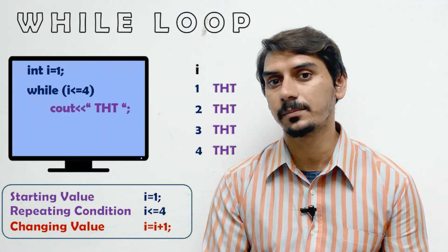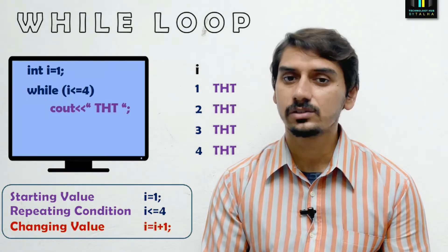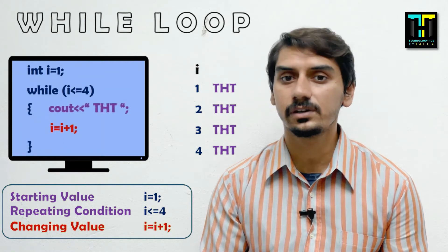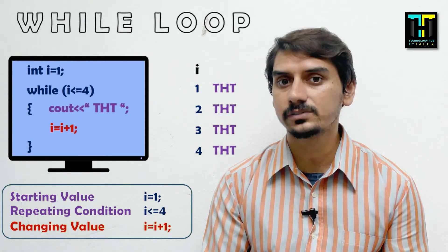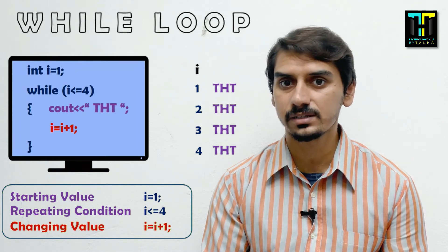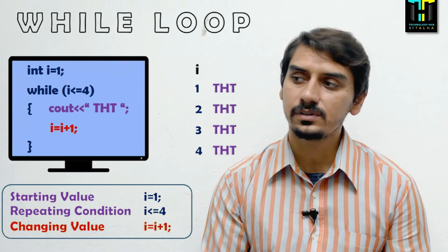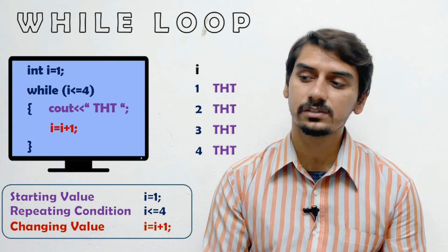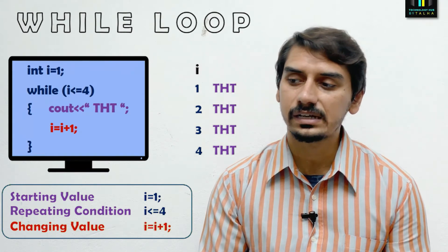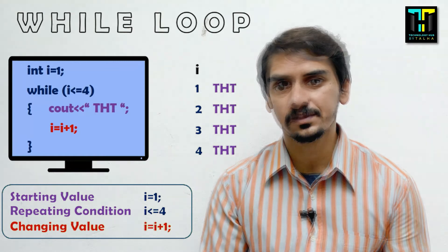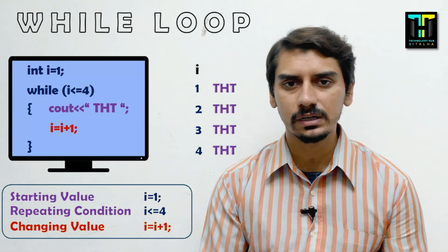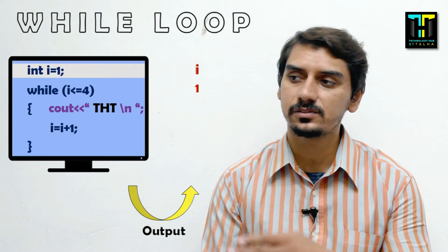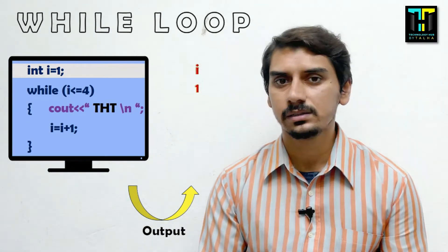We declare this increment i = i + 1 inside the body of the while loop, just before the loop terminates. So this small piece of code, when executed, displays 'tst' four times. Now let's look at the execution process step by step.